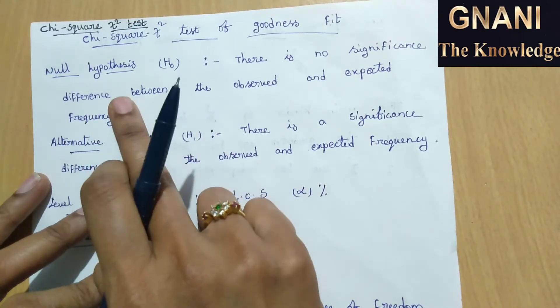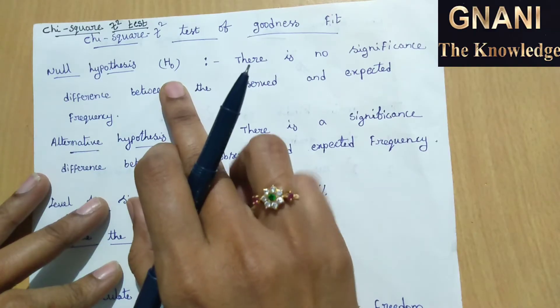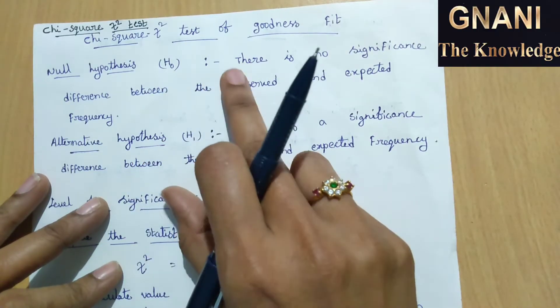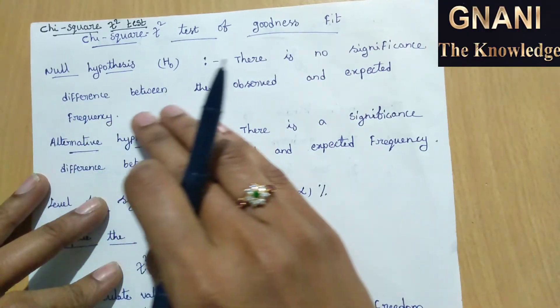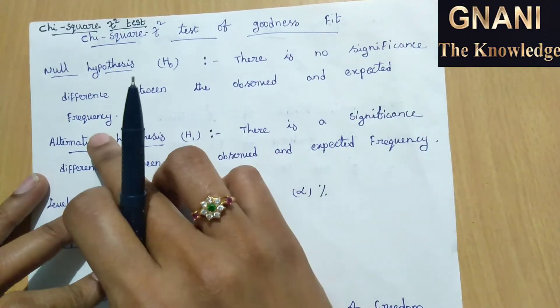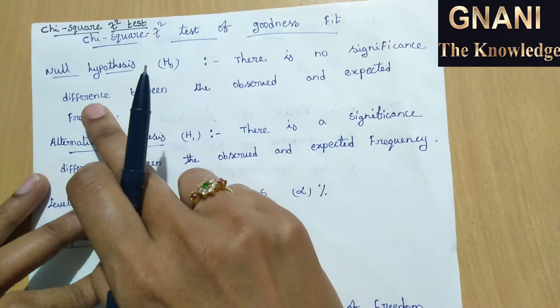Null hypothesis. So null hypothesis is denoted as H0. In this null hypothesis we note that there is no significant difference between the observed and expected frequency.